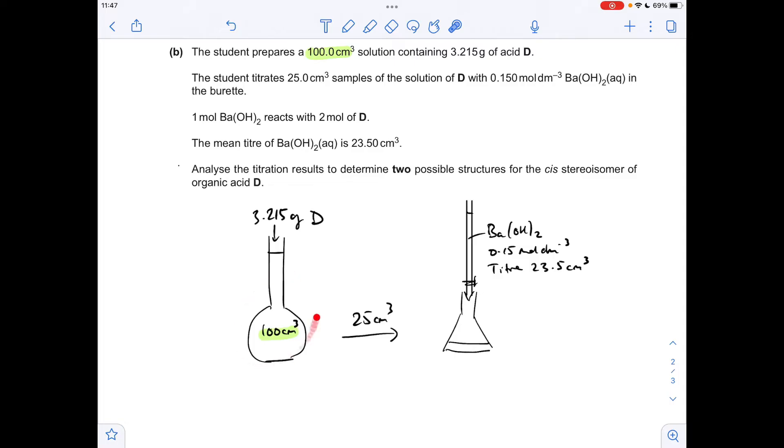So the students prepared a 100 cm³ solution of acid D. We know that there's 3.215 grams gone into there. They've taken 25 cm³ out. Obviously, that's what that is there. Done a titration.